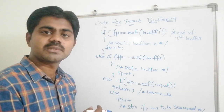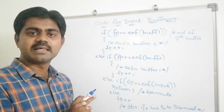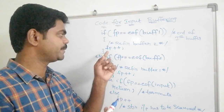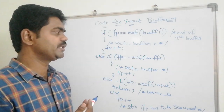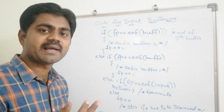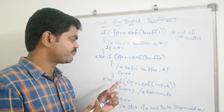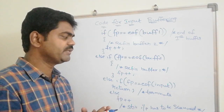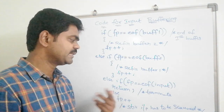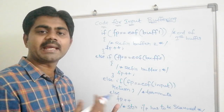If FP equals EOF of buffer 1, refill buffer 2 and increment FP. Else if FP equals EOF of buffer 2, refill buffer 1 and increment FP. Else if FP equals EOF of the entire input, the entire input is over — then return, meaning we terminate.